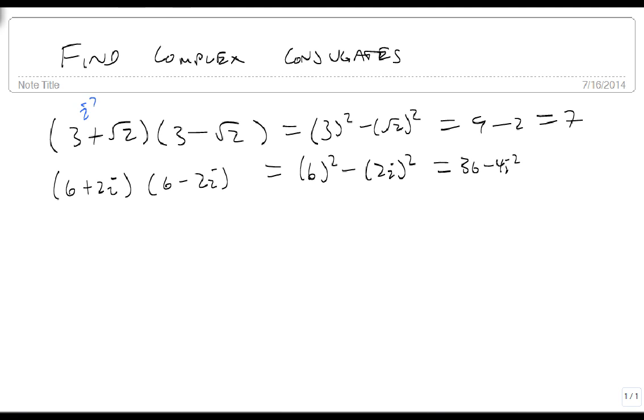But i squared, by definition, is negative 1. So this becomes minus 4 times minus 1, which is really plus 4, which is 40.